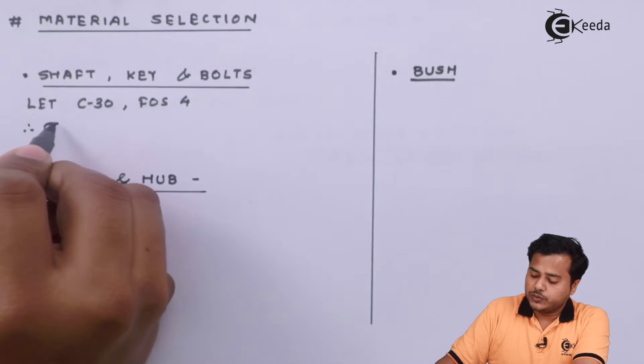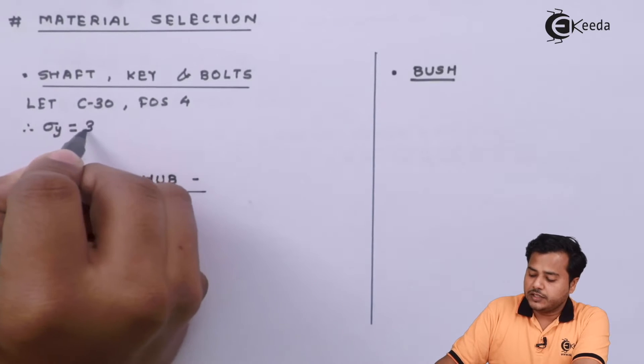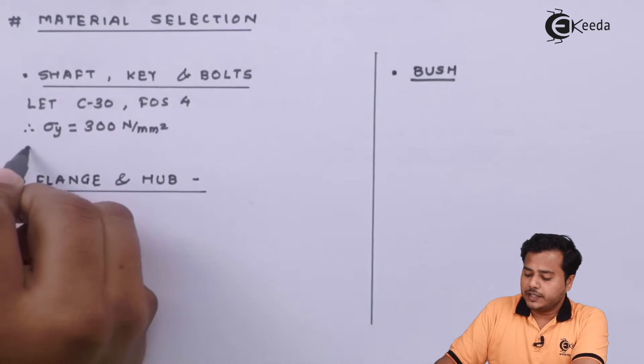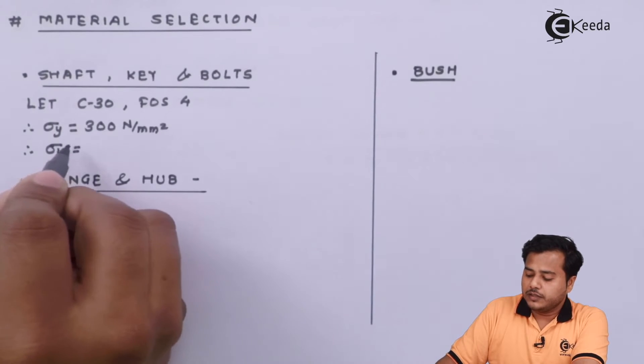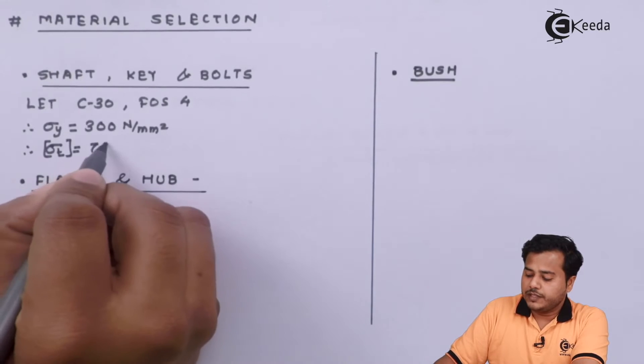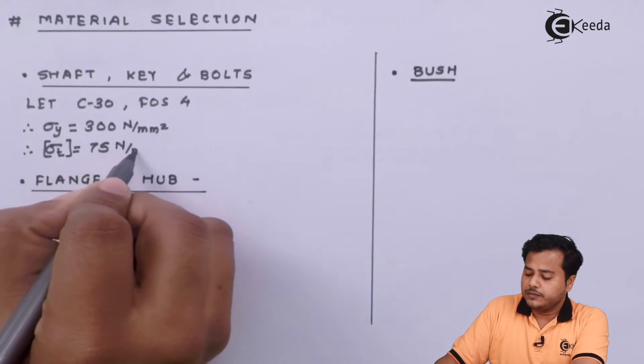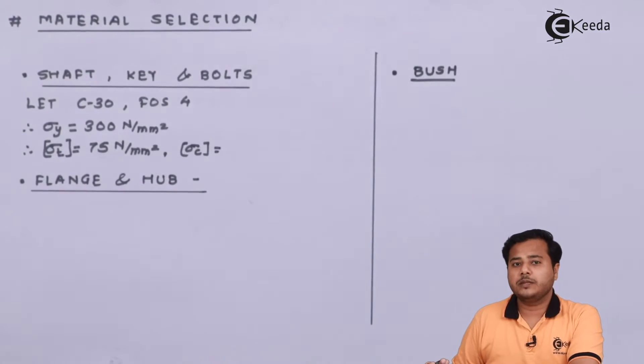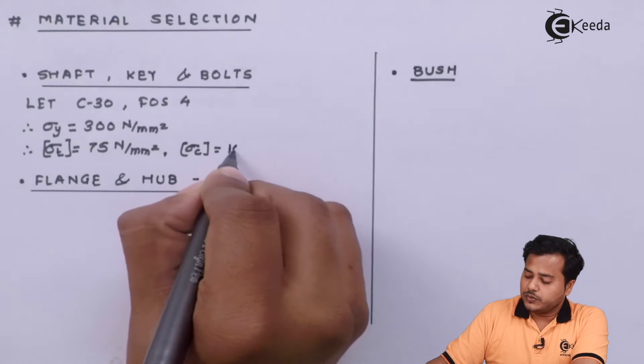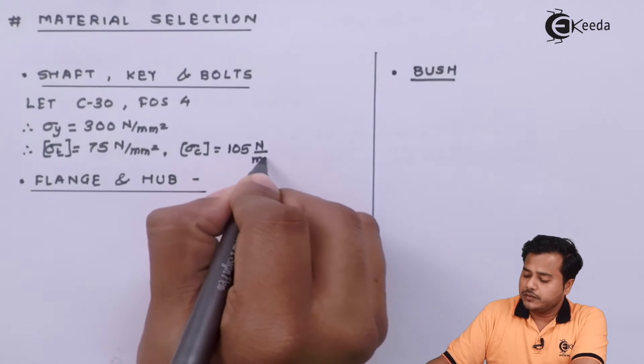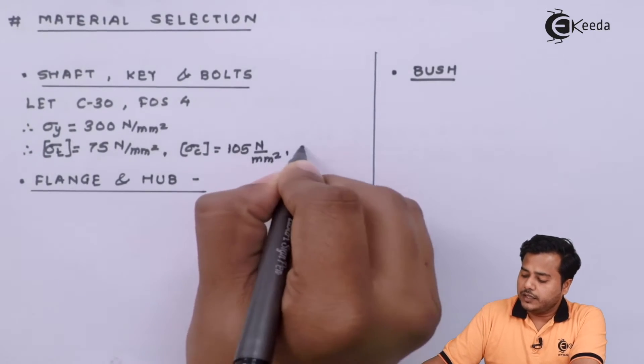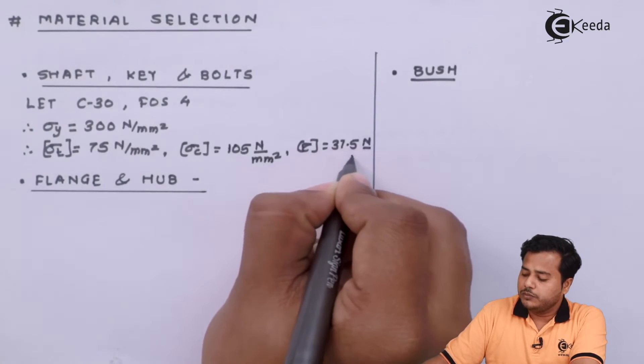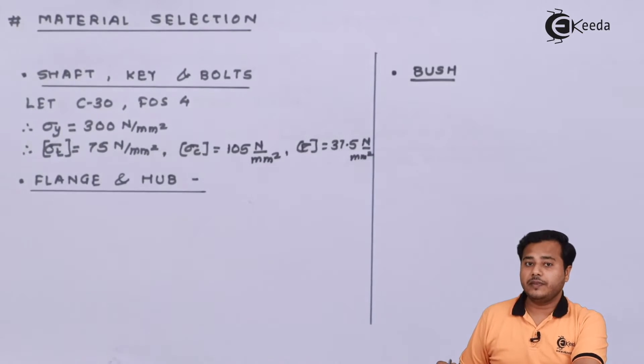And therefore, as we know sigma y is 300 Newton per millimeter square. For this particular thing, we can say sigma T of course the allowable value is 75 Newton per millimeter square. Sigma C can be increased to 1.4 times this value 40% value makes it out 105 Newton per millimeter square. And tau allowable will become 37.5 Newton per millimeter square.